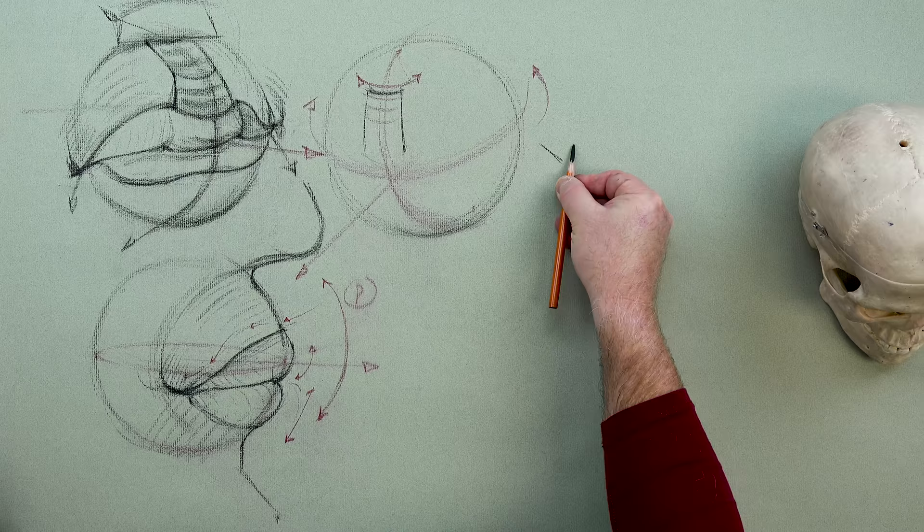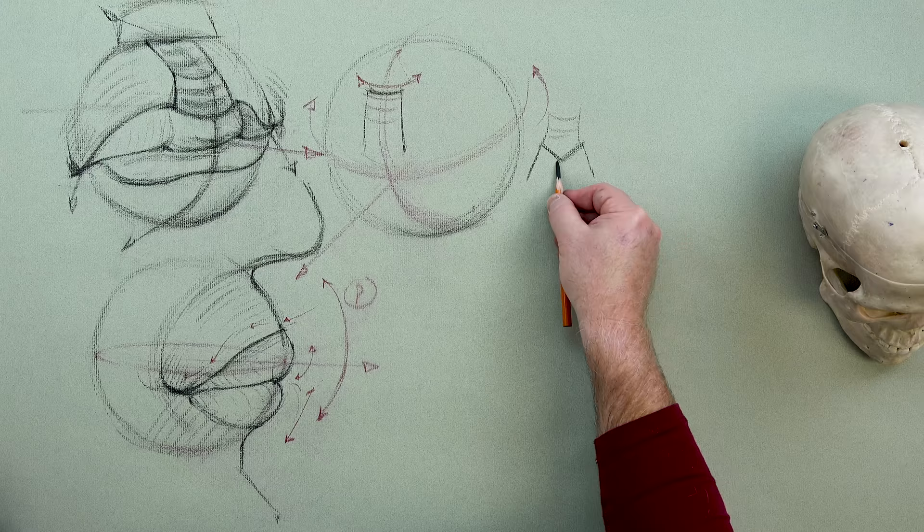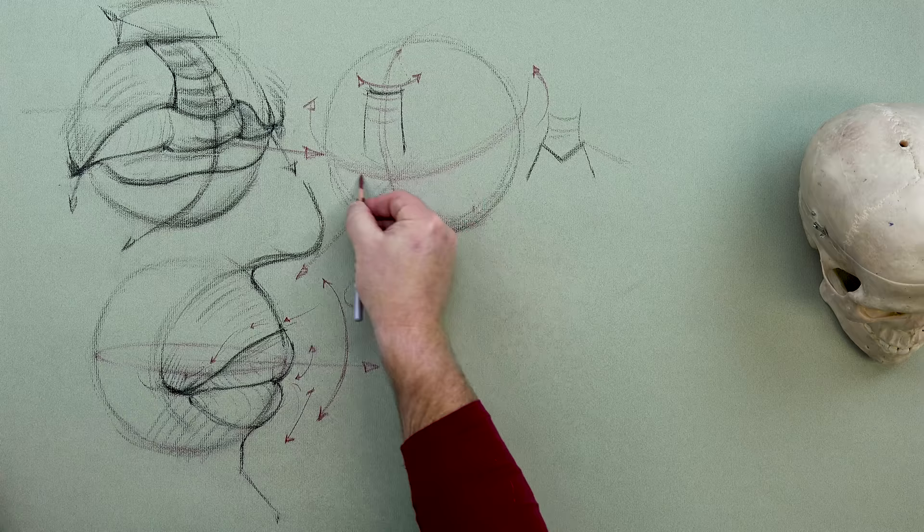Where the philtrum ends and the lip begins, we're going to get this notching — this M part. This is a very soft M shape. I'm going to draw it over here. It is very much like this M shape. So the philtrum's here, but then we see this letter M for the lips — for the front lip structure that can come out later on, winged out through there. So look for the M.